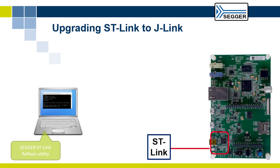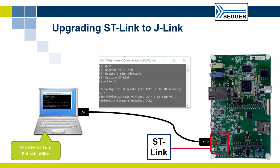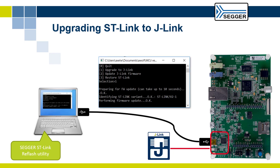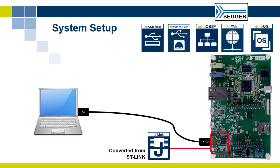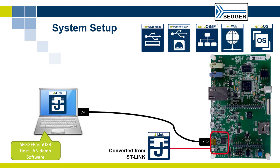First, download the SEGGER ST-Link reflash utility from the SEGGER website. Connect the debug connector on the Discovery Board to your computer and convert the ST-Link debugger firmware on the Discovery Board to the J-Link firmware by using the SEGGER ST-Link reflash utility. Make sure you have the SEGGER J-Link software pack installed on your machine and you downloaded the M-USB-Host LAN demo from the SEGGER website.